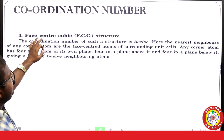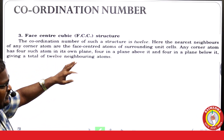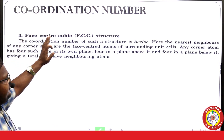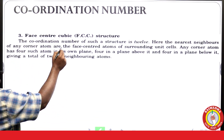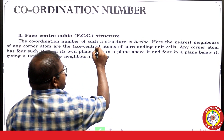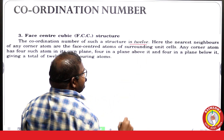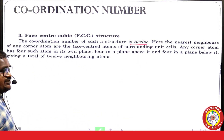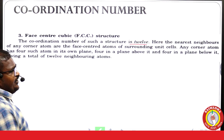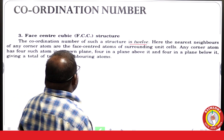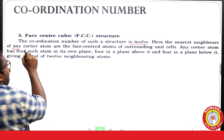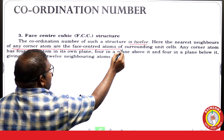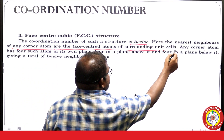The third case is face-centered cubic (FCC) structure. The coordination number of FCC structure is 12. The nearest neighboring atoms of any corner atom are the face-center atoms of the surrounding unit cells.